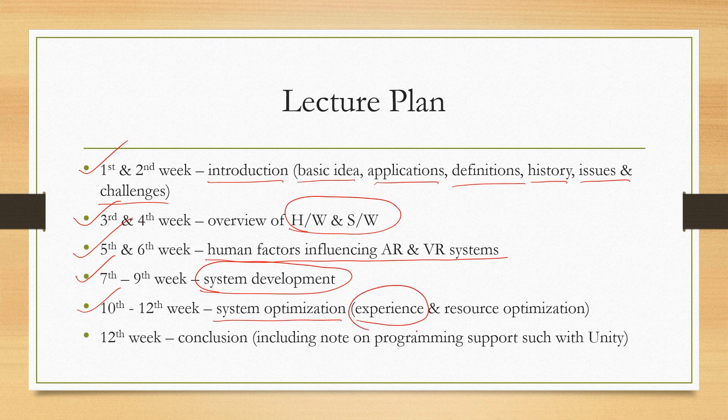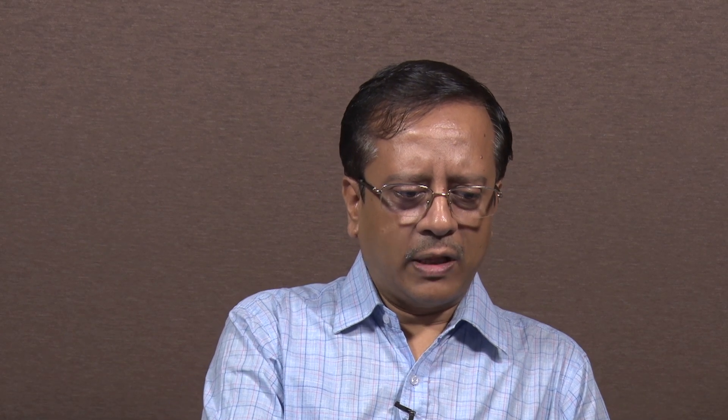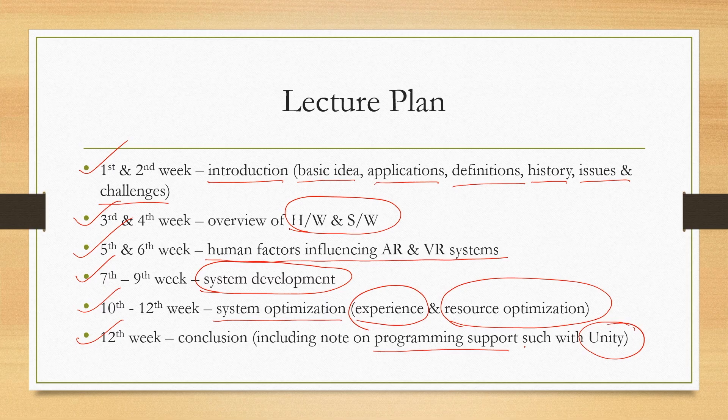We will be covering two types of optimization concerns: optimizing user experience and also optimizing resource requirements. Both will be taken up in detail in these three weeks, including a preliminary discussion on computer graphics and how such knowledge is relevant for understanding these types of systems. In the twelfth week, we are also going to talk about the programming support that a developer can expect while building such systems, where we will try to marry the concepts learned in the previous weeks to the programming environment support. We will be taking up this discussion with respect to a specific development platform, that is Unity. Also in the twelfth week, we will be concluding the course.